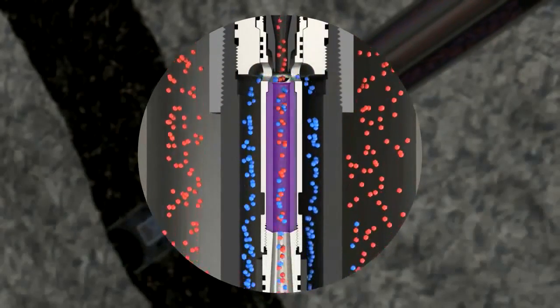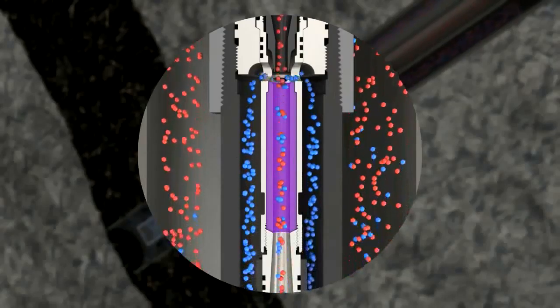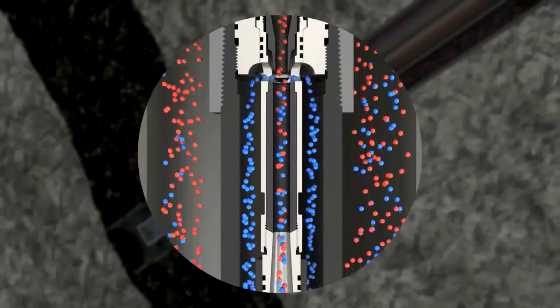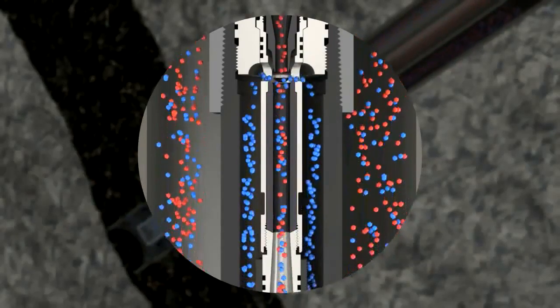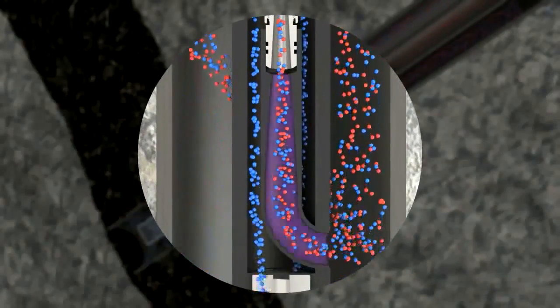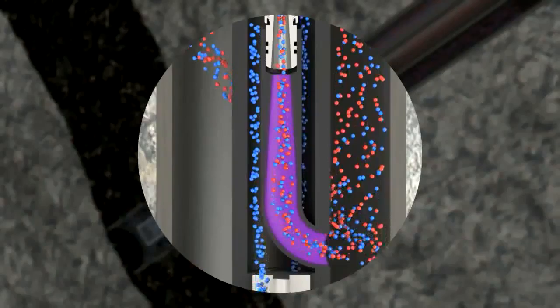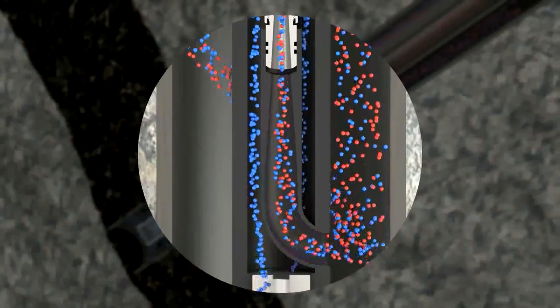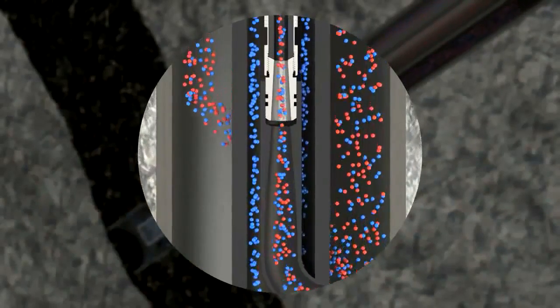In a mixing tube or throat, the power fluid encounters the produced fluid, where it combines and accelerates to an average velocity. In the pump's diffuser, the velocity of the mixed stream is converted back to pressure and the combined fluids lift to the surface.